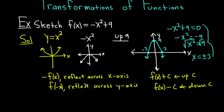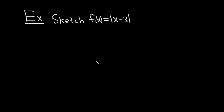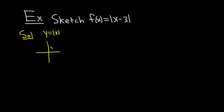Let's go ahead and do another example. We are asked to sketch f of x equals the absolute value of x minus 3. As before, you want to think about what function you're working with — in this case, it's the absolute value of x. The graph of y equals the absolute value of x is pretty simple; it just looks like a v. Now we're subtracting 3 from the x, so whenever you subtract from the x, you go right — we're going to go right 3.